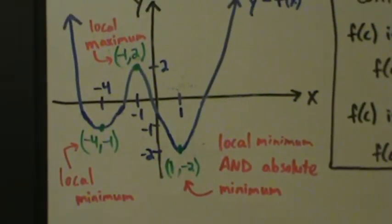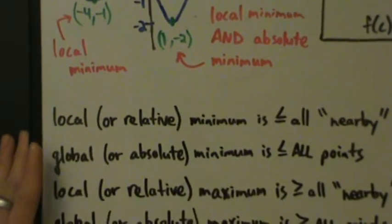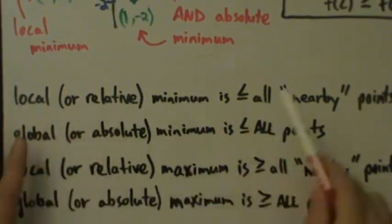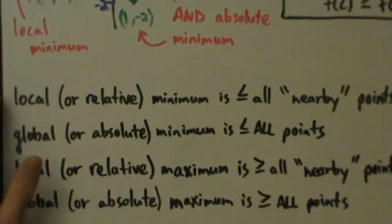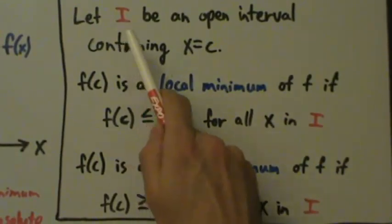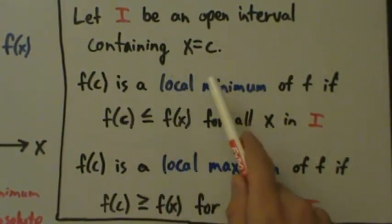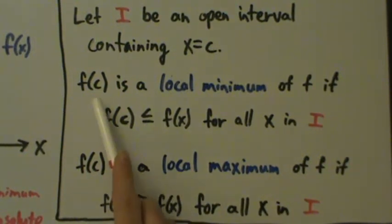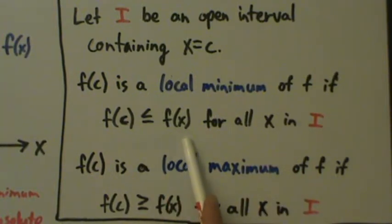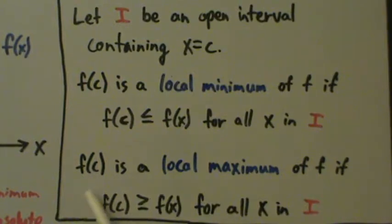It's straightforward for the most part, but let's talk about what we mean by nearby more formally. Let i be an open interval containing x equals c. Then f of c is a local minimum of f if f of c is less than or equal to f of x for all x in this interval i. And f of c is a local maximum of f if f of c is greater than or equal to f of x for all x in i.